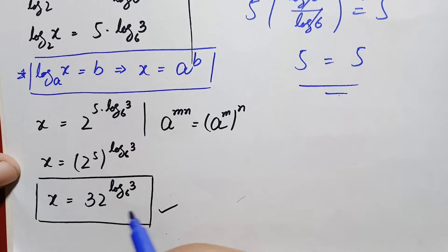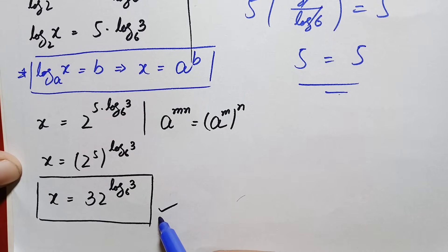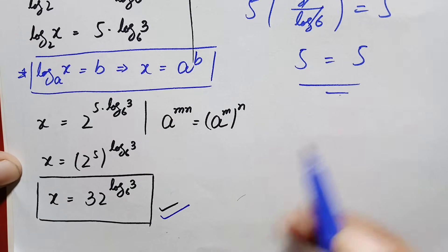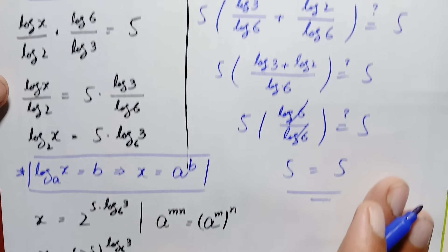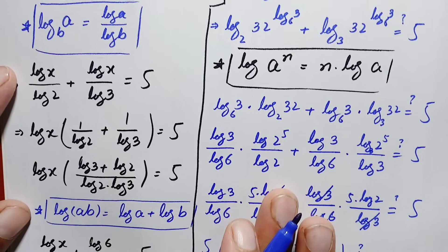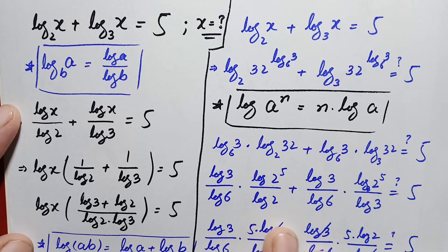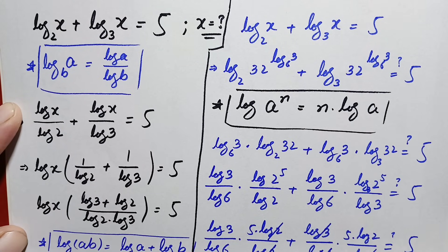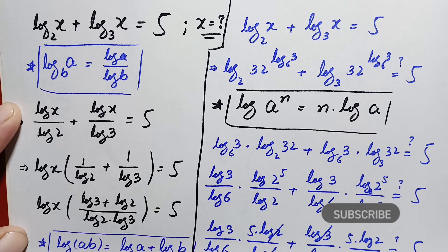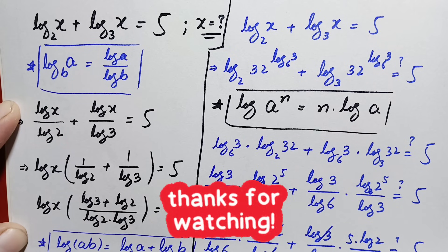Since both sides are equal, x equals 32 raised to power log of 3 with base 6 is confirmed as the exact and correct value of x in this interesting logarithm math problem. Don't forget to subscribe to my YouTube channel for more interesting step-by-step math solutions. Thanks for watching.